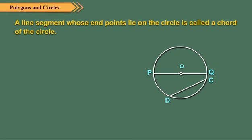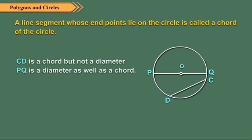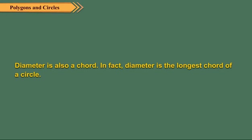Observe the line segments PQ and CD. Obviously, CD is a chord but not a diameter. PQ is a diameter. Is it also a chord? Yes. PQ is also a chord. So diameter is also a chord. In fact, diameter is the longest chord of a circle. The length of a circle is called its circumference.